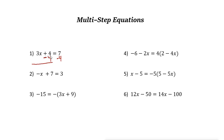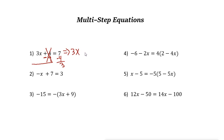3x plus 4 minus 4 — do the same thing for the other side: 7 minus 4, which is 3. And 3x plus 4 minus 4, these two cancel out. So the result of this operation is 3x equals 3.